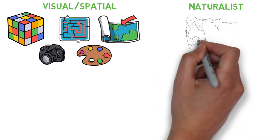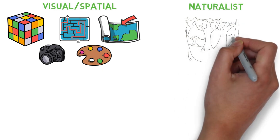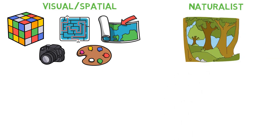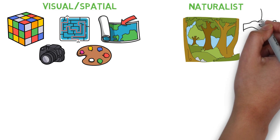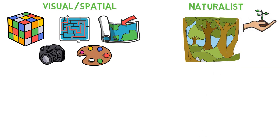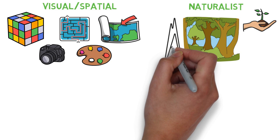People with naturalist intelligence have a sensitivity to and appreciation for nature. They have a strong affinity to the outside world, to specific animals, plants and other objects in nature. Naturalists have a special ability to grow plants, vegetables and fruits and love to walk, climb, camp and hike.